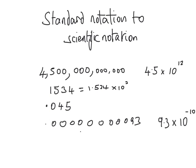Now let's deal with decimal numbers — the method here is slightly different. First, we work out the coefficient by looking for the first non-zero number after the decimal point, which in this case is 4, then we put the decimal point after it, giving us 4.5 as the coefficient. To work out the exponent, we count the number of digits to the left of where the decimal point now is, between the new decimal point and the original decimal point. There are 2 digits, so the exponent is minus 2 — it's always minus for decimal numbers.